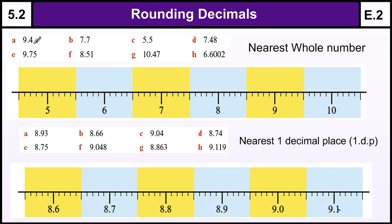So to the nearest whole number if I just have a look at some of these numbers: 9.4, 7.7, 5.5, and 7.48. 7.48 is somewhere between 7.4 and 7.5, so 7.48 is going to be around 7.5.